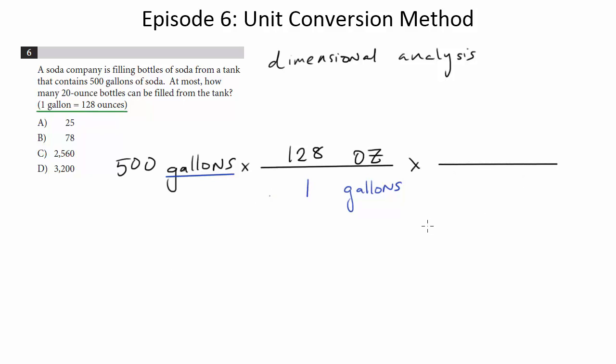Now we need to convert to our last little thing. Again, ounces is going to go in bottom. And then on top is going to be 20-ounce bottles. Because now we're going to convert from ounces to 20-ounce bottles. Now, how many ounces are there in a 20-ounce bottle? Well, in one 20-ounce bottle, there are 20 ounces.